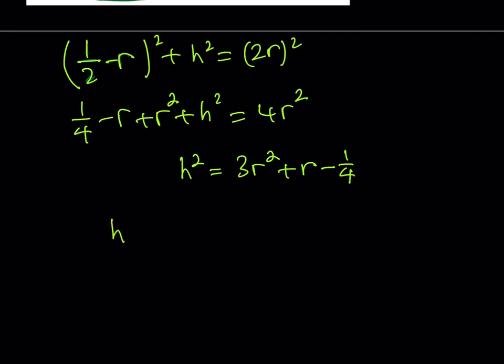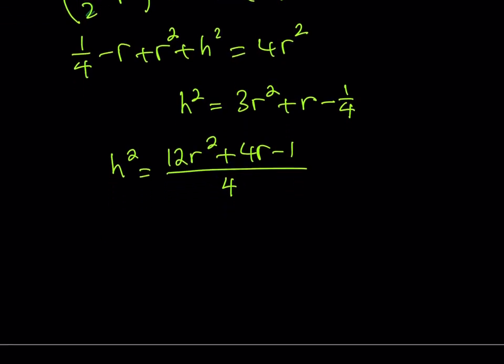Obviously, this can be simplified a little bit. At least, we can make a common denominator. I don't want to deal with fractions like this. So, what I'd like to do is multiply or make a common denominator. In other words, 12R squared plus 4R minus 1 all over 4. Now, this is a little easier to square root. So, from here, H is going to be the square root of the numerator and the denominator separately. You know, that's a quotient. So, it's going to look like this. That's my height in terms of R. So, this is the first part. We found the height.